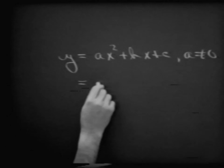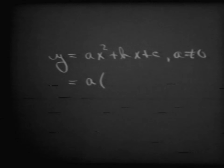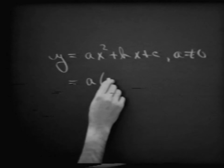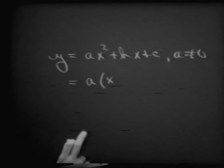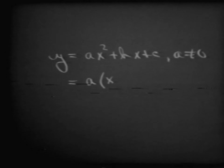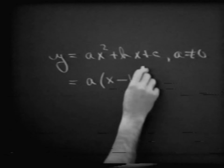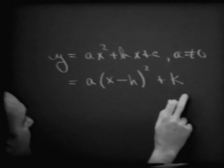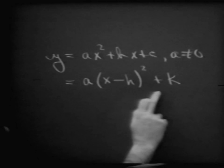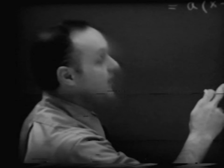And the pattern, if you recall, that we ended up with yesterday was: a times x minus h, all squared plus k. Where h, k was the vertex point of our graph.